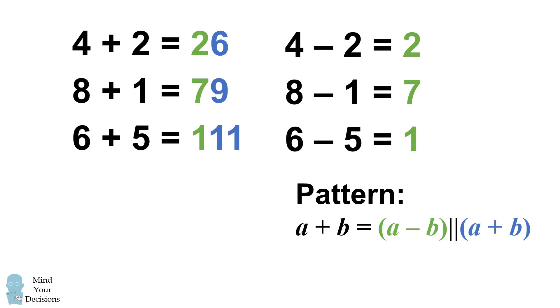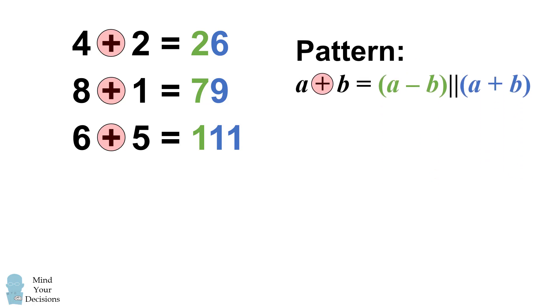Now to reduce confusion, when we combine two numbers I'll mark the plus sign with a red circle over it. So the question is, what do 7 and 3 combine to be? Well, 7 minus 3 is equal to 4, and 7 plus 3 is equal to 10. So that's our answer, 410.